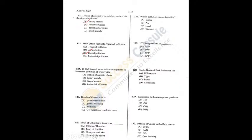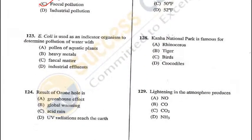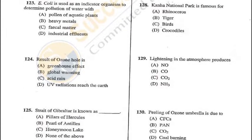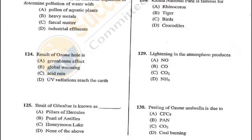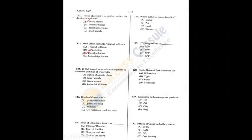Question 123: E. coli is used as an indicator to determine pollution of water with fecal matter — C is the correct answer. Q121 = A, Q123 = C. Question 124: The result of the ozone hole is that UV radiations will reach the Earth, having a damaging effect on human health — particularly skin cancers and cataracts — D is the answer.